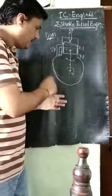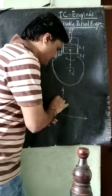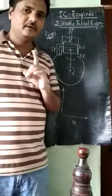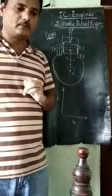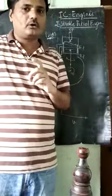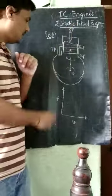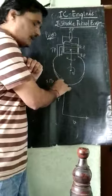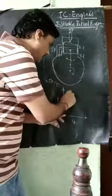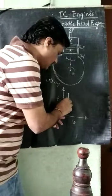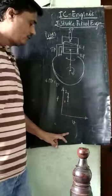We will look at the PV diagram. First is the compression, then the expansion or power stroke. Since this is a petrol engine working on the Otto cycle, heat addition occurs at a constant volume process — process 1 to 2 is the constant volume process, same as we have already studied.